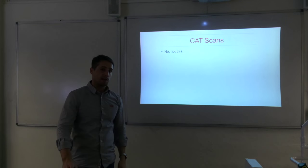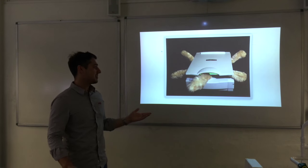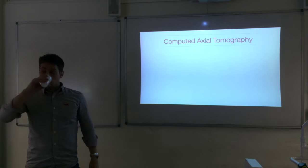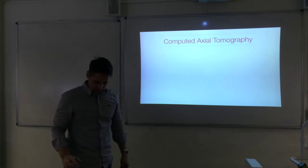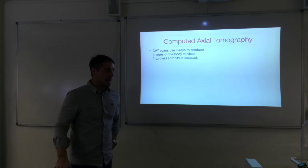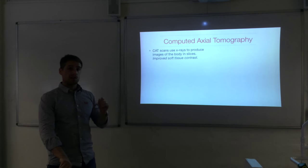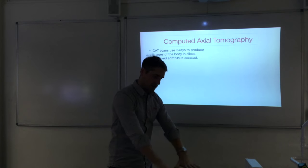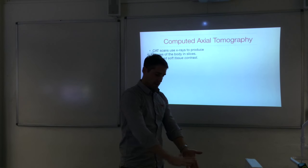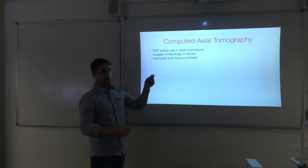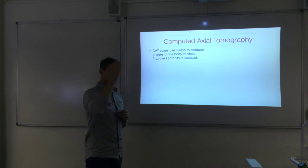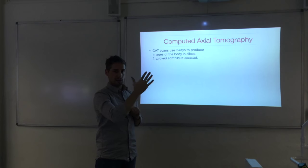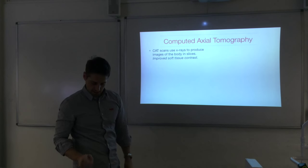Now let's move on to CAT scans — computed axial tomography, sometimes called CT scans. CAT scans use x-rays to produce images of the body in slices. Rather than a single flat exposure, a fan-shaped beam of x-rays is used to image a thin slice of the body. Images are taken slice by slice as the patient moves through the scanner, and these can be reconstructed into a 3D image, giving improved soft tissue contrast.